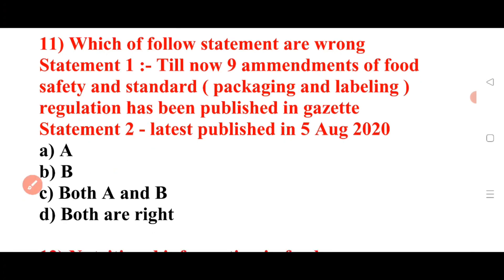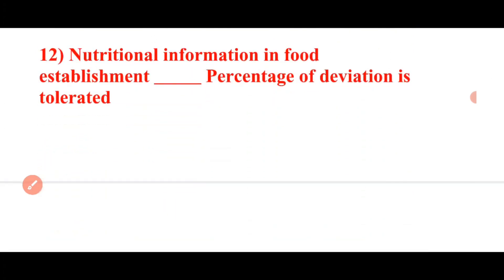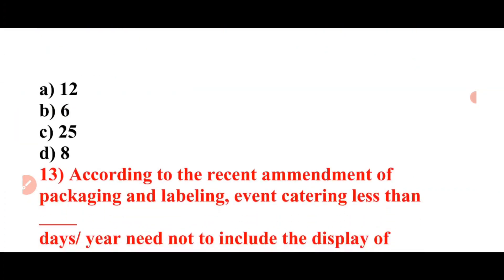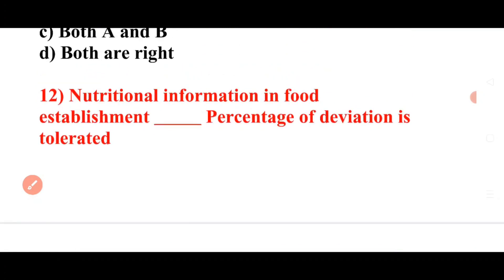Next question: Nutritional information in food establishments — what percentage of deviation is tolerated? Options: 12%, 6%, 25%, 8%. Answer: C is the correct answer — 25% deviation is tolerated for nutritional information in food establishments.